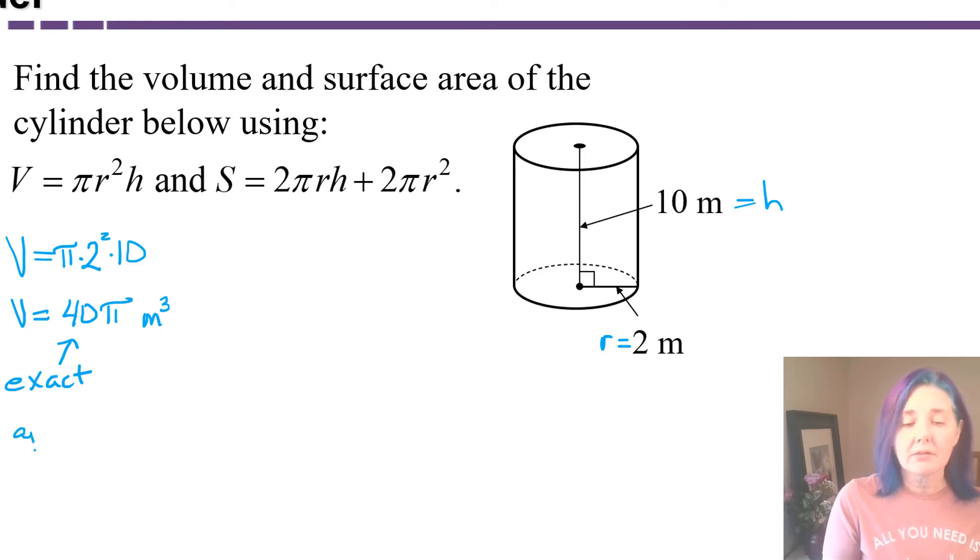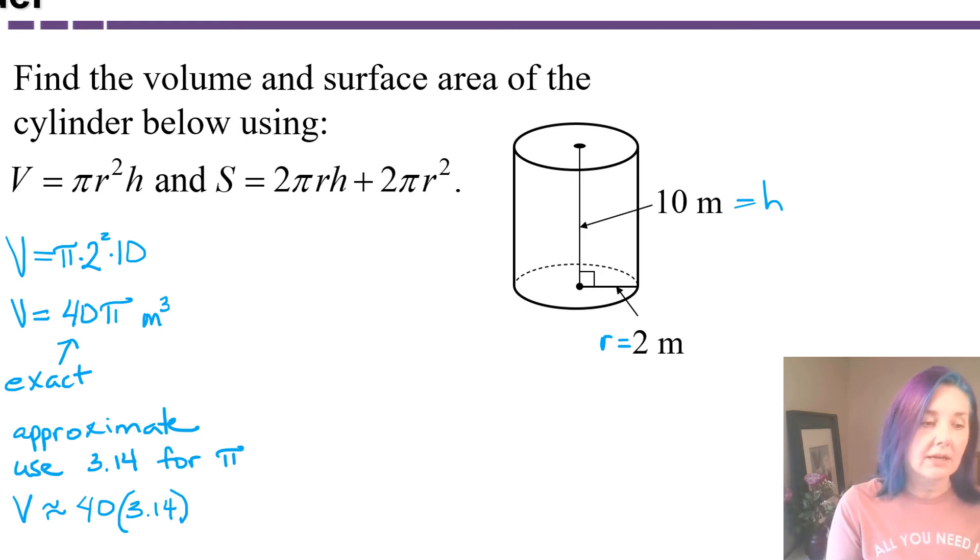However, if they ask you to approximate the answer, they will often tell you to use 3.14 for pi. And when they do that, don't make the mistake of using the pi button on your calculator because that won't round off to 3.14, and it'll give you a slightly different answer, and it could mess you up. So just type in 3.14. So I'm going to find the approximate value of this volume using 3.14 as an estimate for pi. I'm going to have to put in my calculator 40 times 3.14, and let's see what I get.